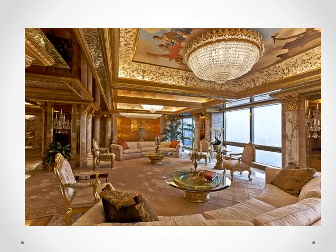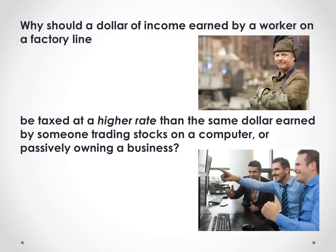While that sort of spending may benefit the economy too, the question we should ask is this: why should a dollar of income earned by a worker on a factory line be taxed at a higher rate than the same dollar earned by someone trading stocks on a computer or passively owning a business? When our tax code gives preference for a dollar of income depending on whether it was earned as wages or as profit, that's where the real distortions come in. The current tax cut proposal would make the preferred treatment of profits and financial gains even more distorted.